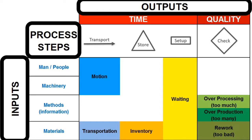I often wonder where these seven wastes come from. In the light of the basic elements of production systems, it is now much easier to understand their origin. They appear as symptoms of issues with the outputs of the production system for specific process steps caused by specific inputs.